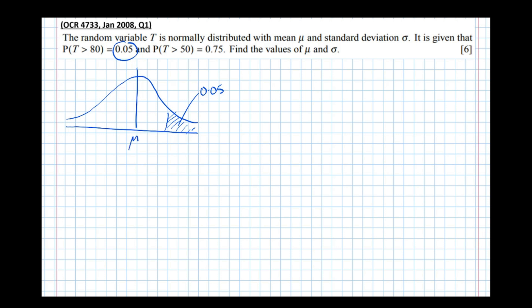Reminding ourselves what a z value is: it means the number of standard deviations from the mean. We've got this boundary here which is 80. So the z value — the number of standard deviations from the mean — is 80 minus mu over sigma. That finds us the distance from the mean divided by the standard deviation, giving us the number of standard deviations from the mean.